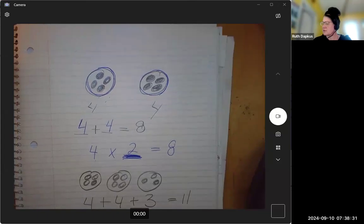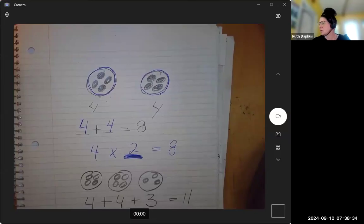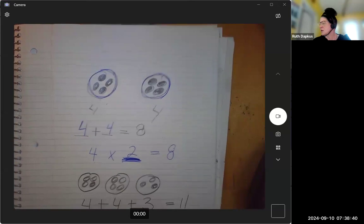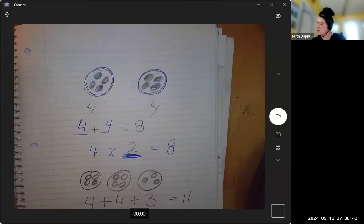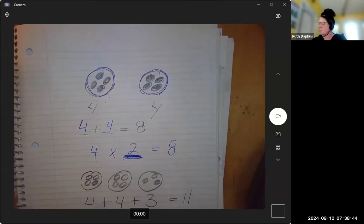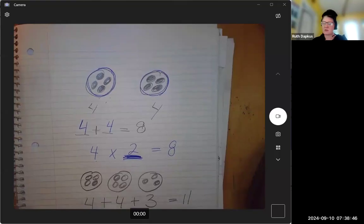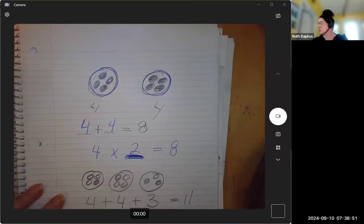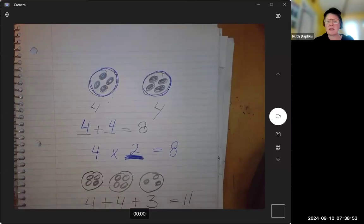Four plus four, then we could write that. That would work because we could write an addition sentence: four plus four plus four equals twelve. And then we could also write a multiplication sentence. We could write three times four, right? Because there's four in each group, three times four equals twelve.